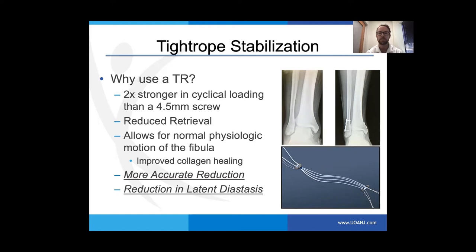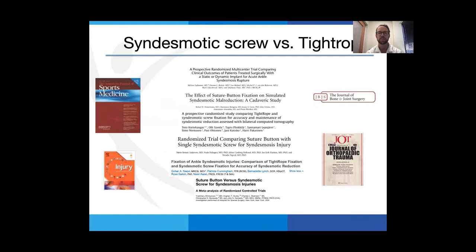Why use a tightrope versus screws? The tightrope allows for normal physiologic motion of the fibula, which improves collagen healing — the basis for syndesmotic stabilization. We remove them less frequently. It's two times stronger in cyclical load than large screws. Most importantly, we get more accurate reduction of the syndesmosis and a reduction in latent diastasis of the ankle joint. Preventing separation is critical not just for return to play, but for long-term joint health, since we don't have a great solution for arthritis in a young patient.